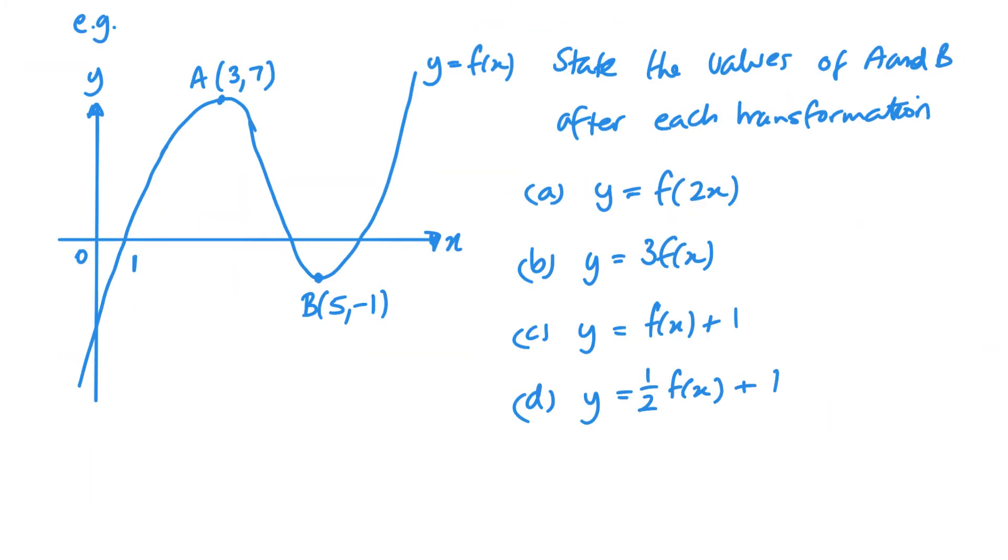Now this time what we're going to do is we're just going to state the values of a and b. So y equals f of 2x. So we need to half our x's. So we get 3 over 2, 7 and 5 over 2, minus 1.